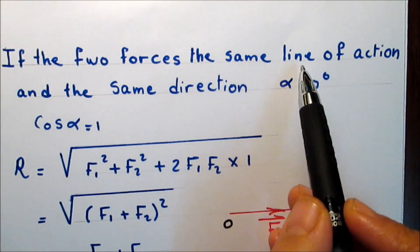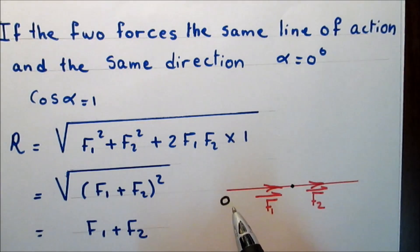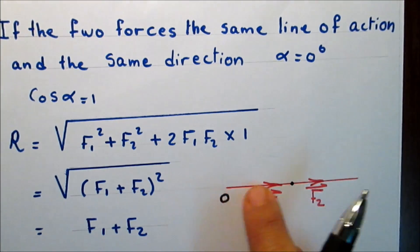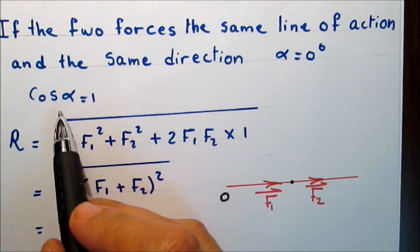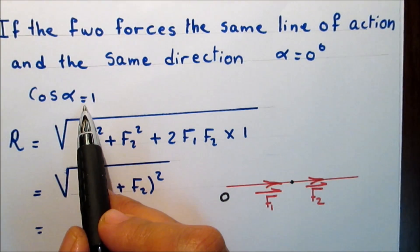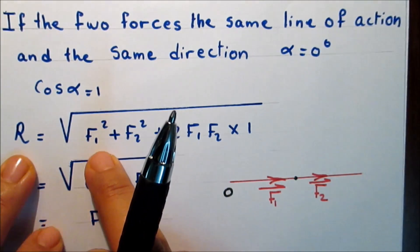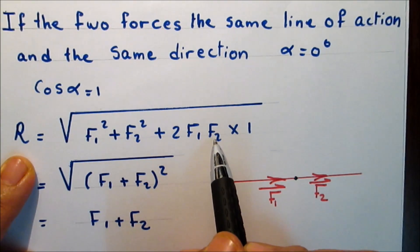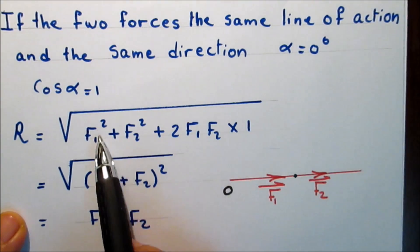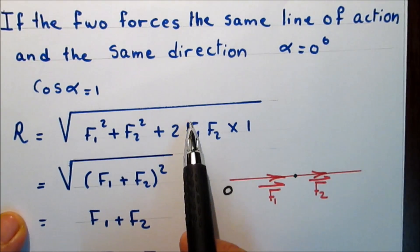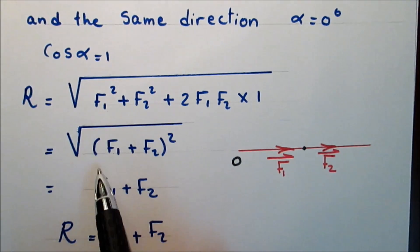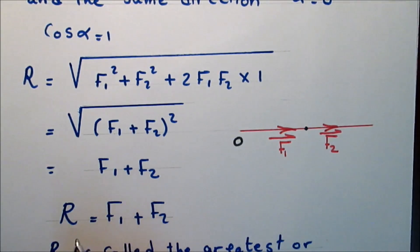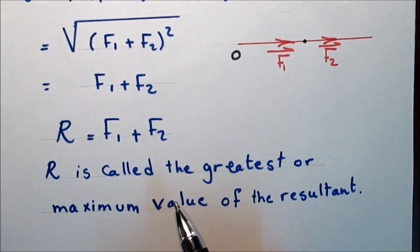If the two forces have the same line of action and the same direction, the angle between them is 0, so alpha is 0 and cosine 0 is 1. The resultant is the square root of F1 squared plus F2 squared plus 2·F1·F2·cosine(alpha). Since cosine alpha is 1, this is a perfect square trinomial: square root of (F1 + F2) squared, so the resultant equals F1 plus F2.